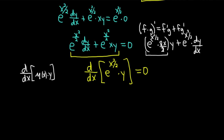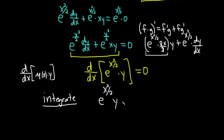You should always check — most of the time you can check in your head. Always: integrating factor times unknown function. To get rid of the derivative you integrate both sides. So you're going to get e to the x squared over two times y equals — integrating zero gives you a constant c, because if you differentiate a constant you get zero.